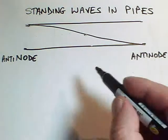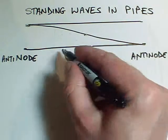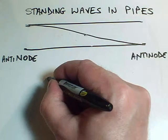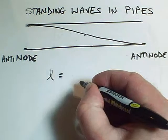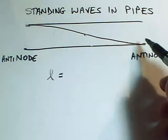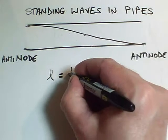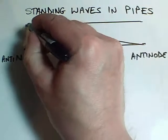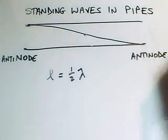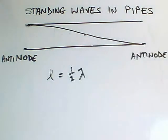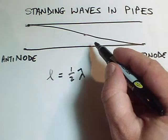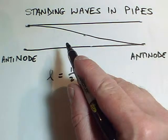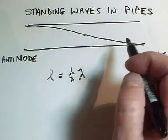And for this particular wave here, the length of the pipe is actually, from an anti-node to the next anti-node, is half a wavelength. To get back to an equivalent point to this, I'd need the other half of the wave going off in that direction. So this is half a wavelength. And that's the simplest kind of wave we can set up in this pipe. This is called the fundamental mode of oscillation.